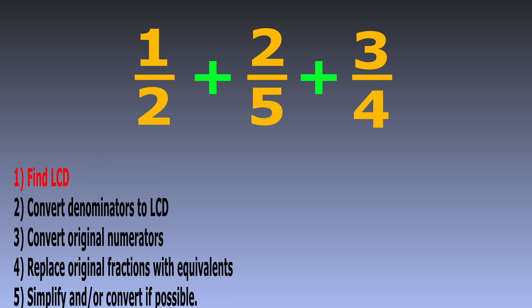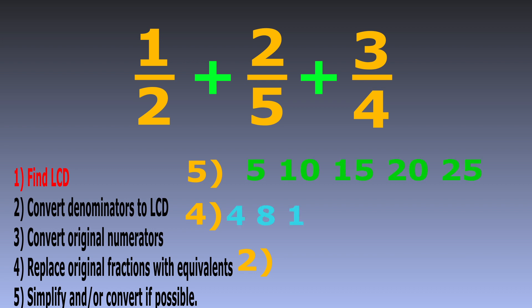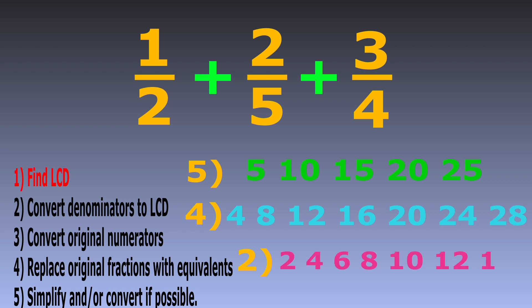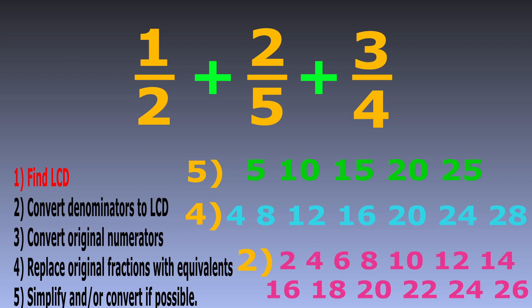We need to first find a common denominator — specifically the lowest common denominator — and we'll do this by finding the lowest common multiple of all three denominators. Make a list of multiples of each denominator, starting with the largest number, writing out about four or five multiples, then listing the other two smaller numbers. Looking carefully, the smallest matching number is 20, so that's our lowest common multiple of 5, 4, and 2, and we'll use that as our lowest common denominator.